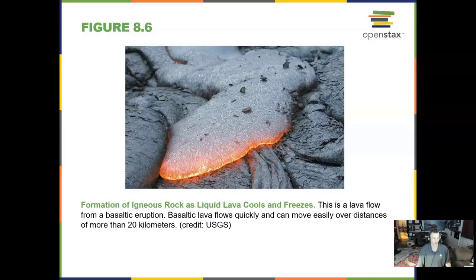Igneous rock means volcanic. It comes from lava flows — basaltic eruptions of basalt — and those can move very fast into a neighboring town.